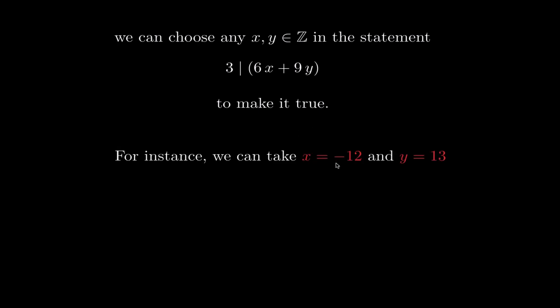To make it concrete, let's say x equals negative 12 and y equals 13. If we substitute, we get 6 times (−12) plus 9 times 13, which works out to 45. And indeed 3 divides 45. That's an example of the second property.